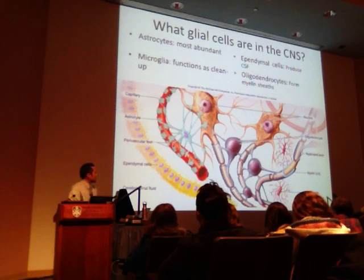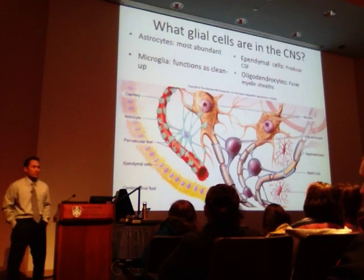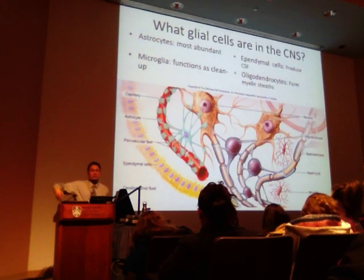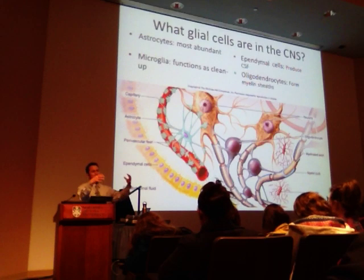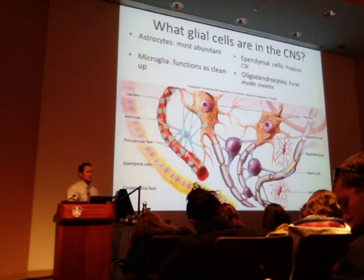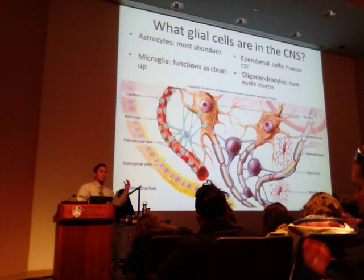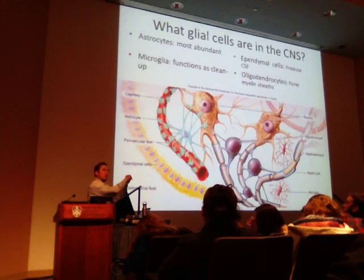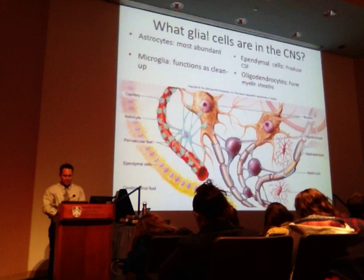Microglia serve a macrophage-like activity — they phagocytose, cleaning up damaged tissue and debris. They're neuronal-like macrophages, small and with less capacity than true macrophages. In a stroke patient, you'd expect to see microglial cells in the scar tissue — those microglial cells are what lay down the fibrotic lesion. Microglial cells serve a cleanup function.